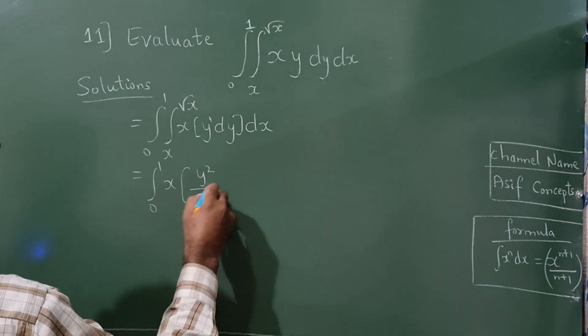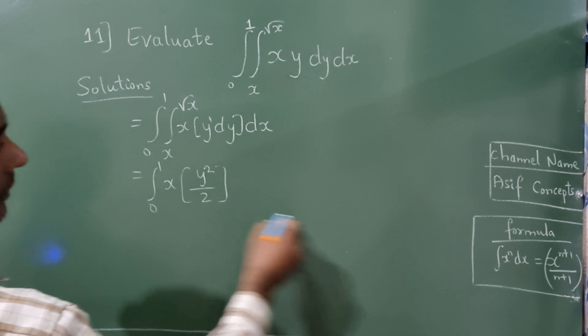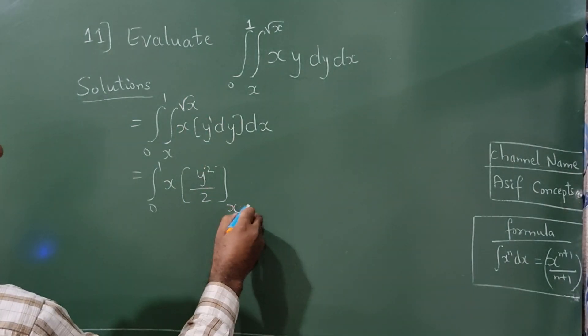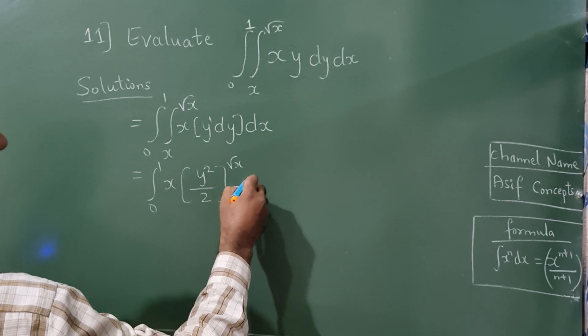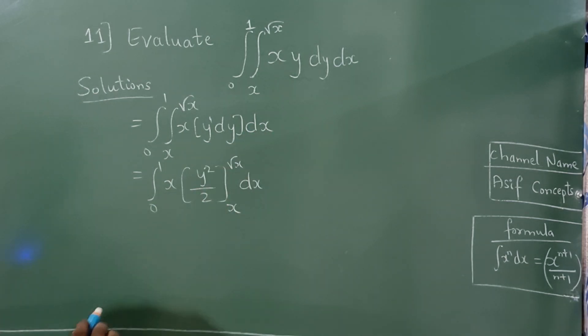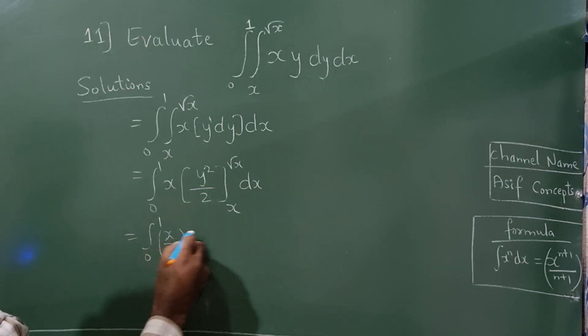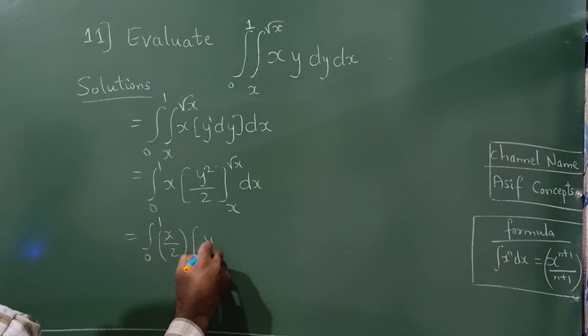According to this formula, now what are the limits here? x to root x. Write this dx as it is. Now integration from 0 to 1, x by 2. Again, y square dx.